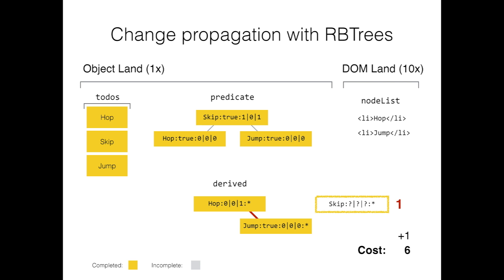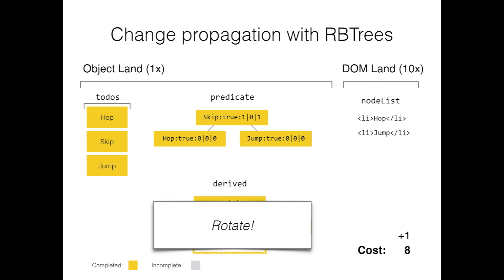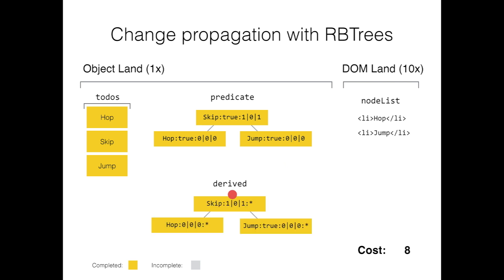We repeat this process by calculating jump's index. To calculate jump, we actually have to read the skip node in the predicate tree. In a red-black tree, calculating an index for a given node takes logarithmic time. With the index of jump, we insert skip to the left of jump, which rotates the tree into its final position. Since we know the location of where skip was inserted within the derived list, we can render just skip and insert it into the DOM at the right place.